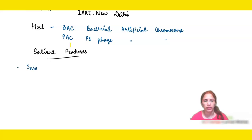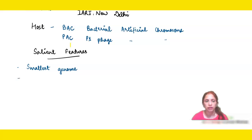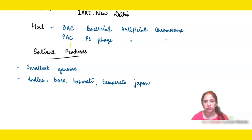Very importantly, rice had the smallest genome in comparison to all cereals known to humans. Five varieties of rice were discovered: Indica, Boro, Basmati, Temperate Japonica, and Tropical Japonica. These are the names of the varieties you need to learn.